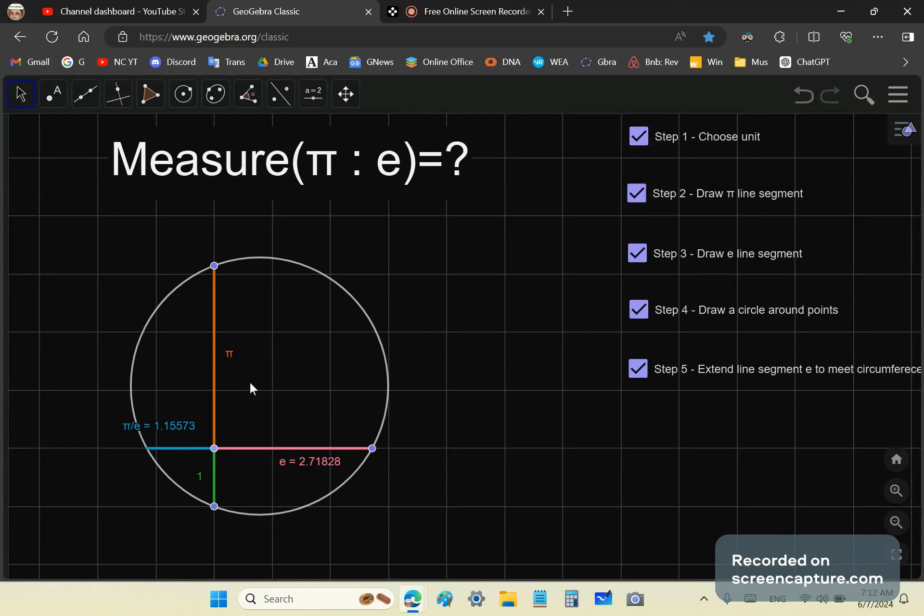We'd have to divide pi and this line segment here into equal parts, and then count the number of equal parts in order to be able to complete the measure. As we know, there is no such equal part for pi and E.